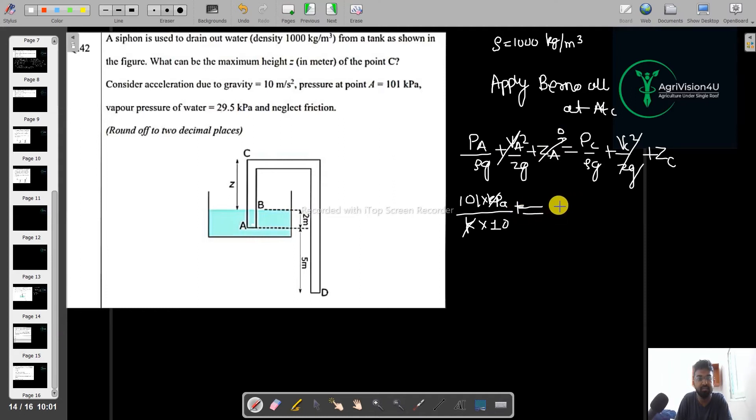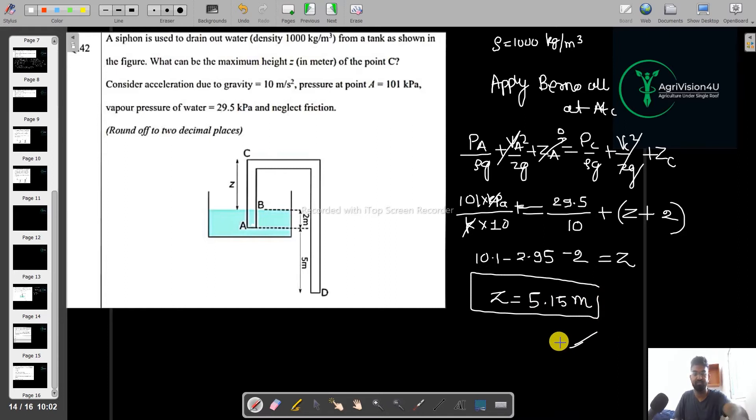You will get pressure at point C is 29.5 kilopascal. This and this will cancel and you're left with 10 plus Z_C. From point A to point C you have Z plus 2. So 10.1 minus 2.95 minus 2 equals Z. Ultimately you will get the value of Z as 5.15, so that should be your final answer. I hope you understood this question.